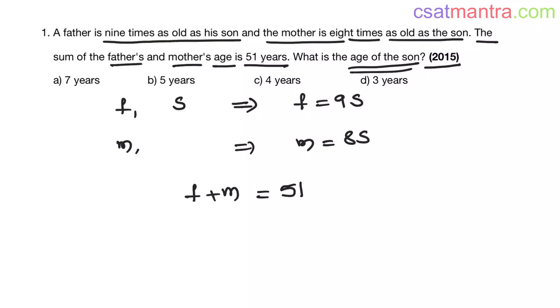We have f plus m equals 51. We have f equals 9s from equation 1 and m equals 8s from equation 2.